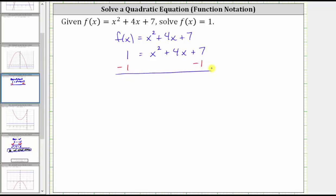Now we simplify. On the left, one minus one is zero. On the right, we have x squared plus four x. Seven minus one is positive six, giving us plus six.